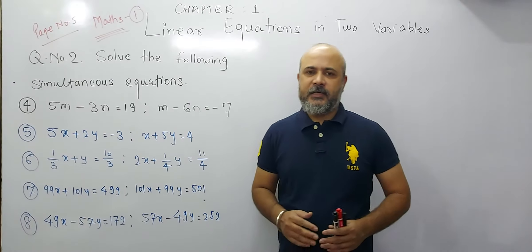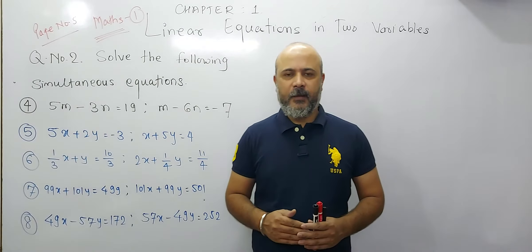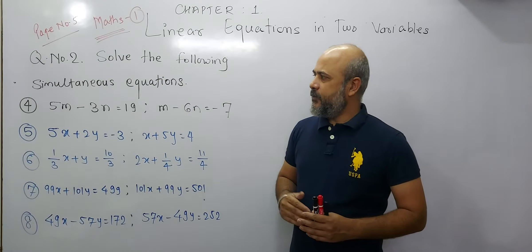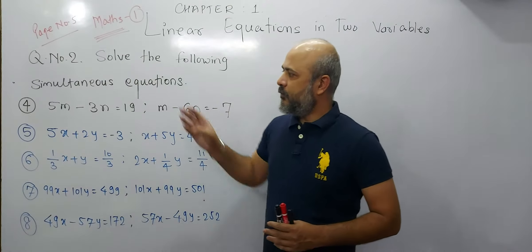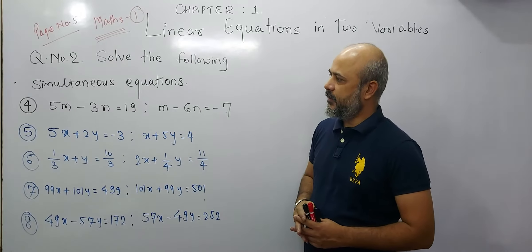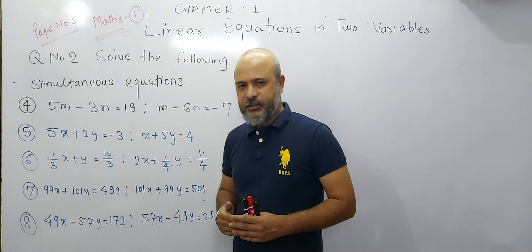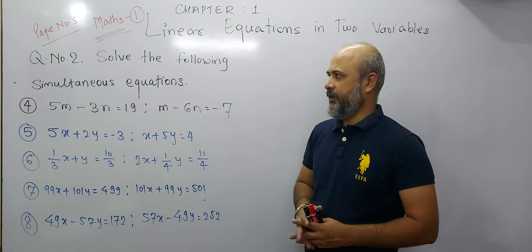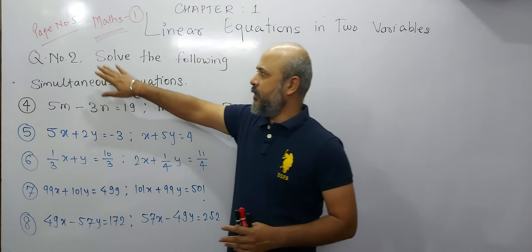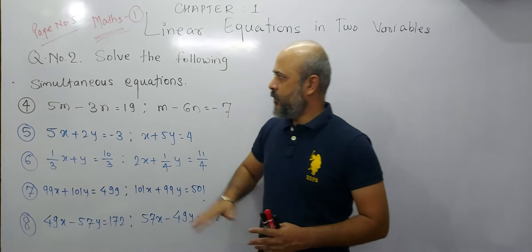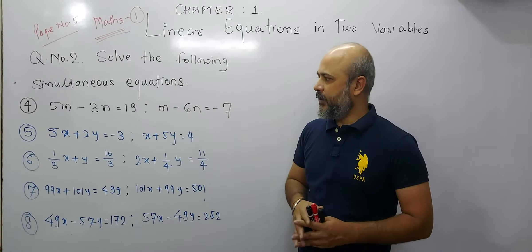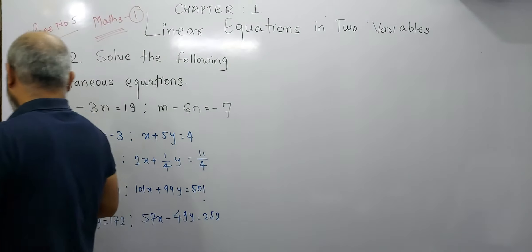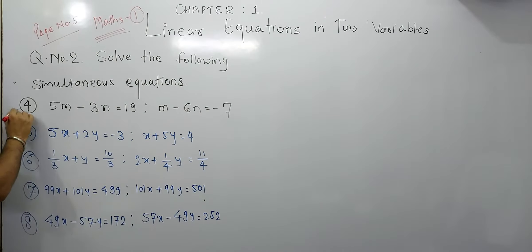Hello students. This is lecture number 4 on linear equations in two variables. In lecture number 3, question number 2, we did the 1st, 2nd, and 3rd questions. In this lecture, we will do question numbers 4, 5, 6, 7, and 8. This is from the textbook, page number 5, question number 2: solve the following equations. Now we will start with question number 4.